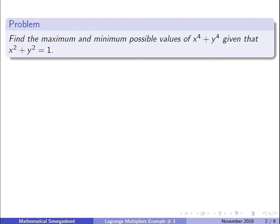The problem is: find the maximum and minimum possible values. We want to optimize x to the 4th plus y to the 4th with the constraint x squared plus y squared equals 1. So g(x, y) = x² + y² = 1 is our constraint, and f(x, y) = x⁴ + y⁴ is the function we want to optimize.